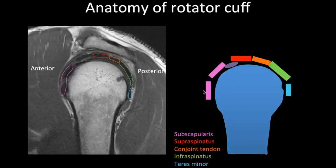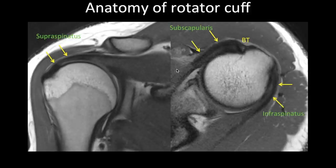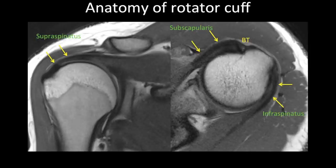Functionally the subscapularis consists of two parts: the superior and inferior subscapularis. On the sagittal image you can see all the rotator cuff tendons. On the coronal image the supraspinatus tendon is well visualized attaching to the greater tuberosity of the humerus, while on axial images you can see the subscapularis and infraspinatus tendons. Please have the patient's arm in the neutral or slightly externally rotated position. Do not scan with the arm internally rotated, as it makes it very difficult to assess the subscapularis and anterior supraspinatus tendons.